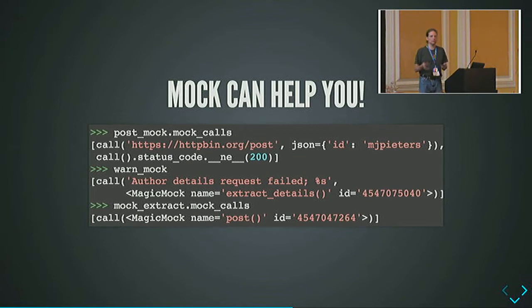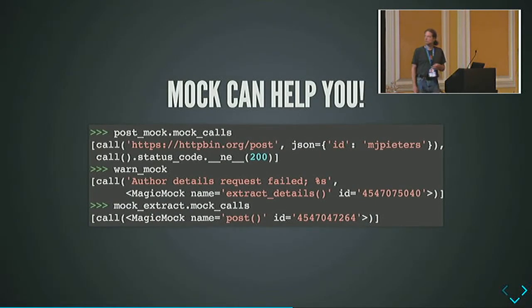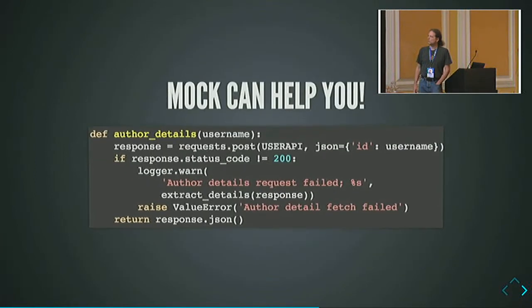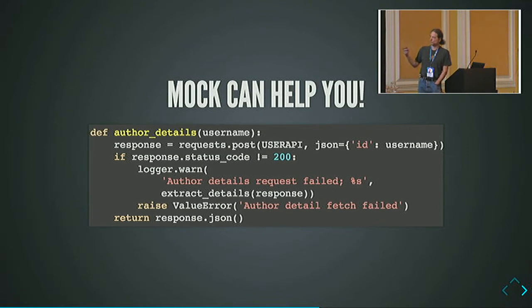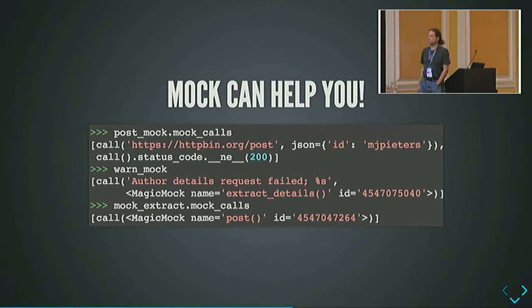mock_calls is a very important attribute — it tells us every call that was made to any of the mock objects transitively. The first line, requests.post is called with a URL, a dictionary, and a keyword argument. There was a second call — status_code. The response is the return value of requests.post, assigned to response — that's the mock now. We look at things in that mock: status_code exists, it's another mock object, and it's compared to 200. The second object is call.status_code not equals 200.